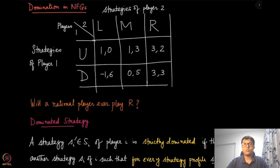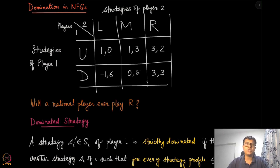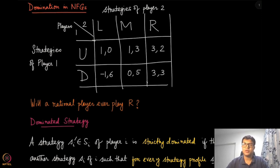Now that we know the normal form games, let us start with the first concept in normal form games. The concept that we are going to start with is called domination — specifically, domination of strategies, where one strategy dominates other strategies. Let us start with an example to understand what I mean by domination.